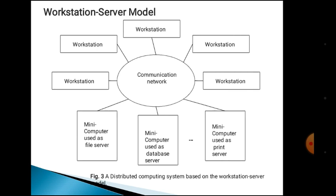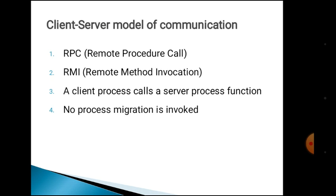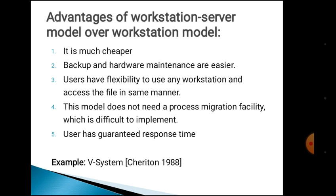There are three different servers: file server, database server, and print server. These servers provide different kinds of services to workstations as per their requirement. Workstations are the clients — most are diskless and few are disk-full. Graphic or interactive applications process locally, but all file, print, HTTP, and computation requests are sent to servers. The client-server communication model uses RPC (remote procedure call), RMI (remote method invocation), and a client process calling a server process function. No process migration is invoked.